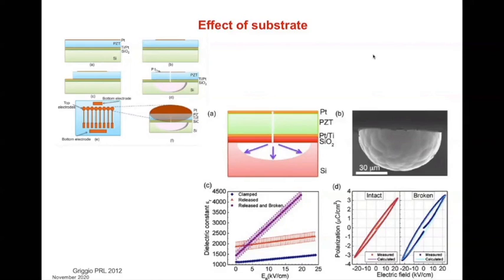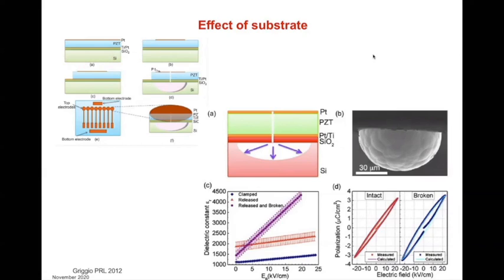Also, when you deposit PZT on the substrate, that is usually done at high temperatures, and as you cool down, because of the difference in thermal expansion between the film and the substrate, there will always be some strain — usually compressive — on the film. That compressive strain may prevent ferroelectric domain walls from moving in the film and therefore reduce the piezoelectric effect. You can release that stress by the same method: drill a small hole and etch the material below the film until it is released, so the built-in strain from cooling is also reduced.